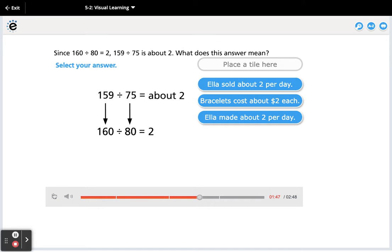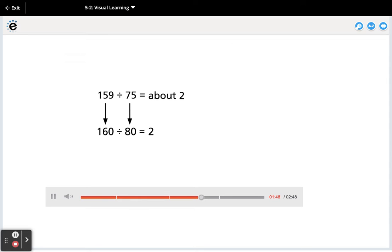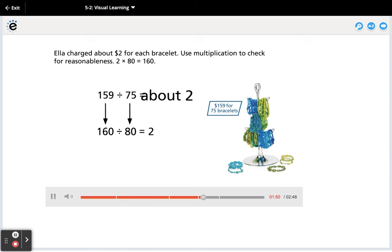What does this answer mean? Select your answer. Ella charged about $2 for each bracelet. Use multiplication to check for reasonableness. 2 times 80 equals 160.